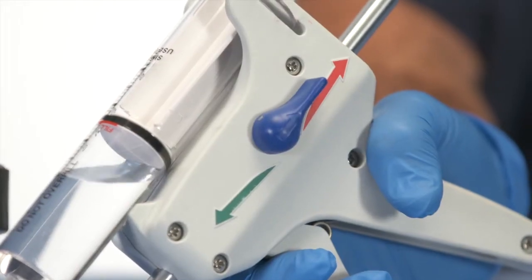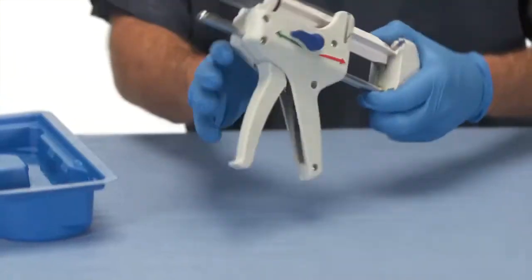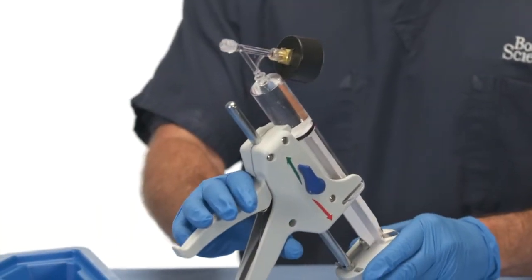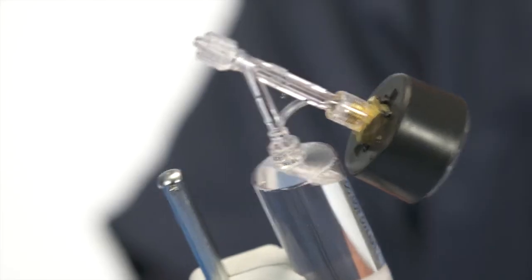Turn the lever to the green arrow inflate position. Angle the gun upward. Pump the handle to purge the air from the syringe.